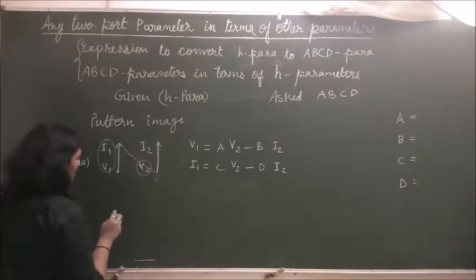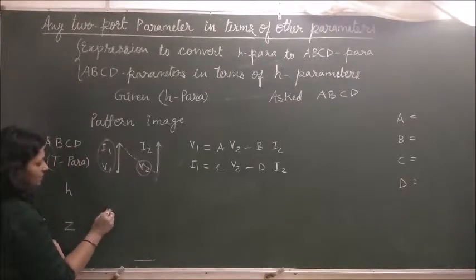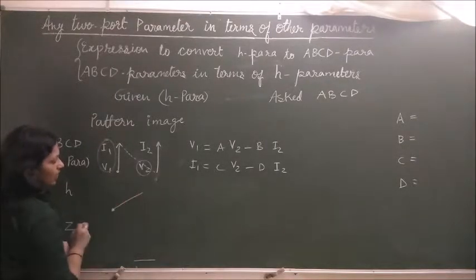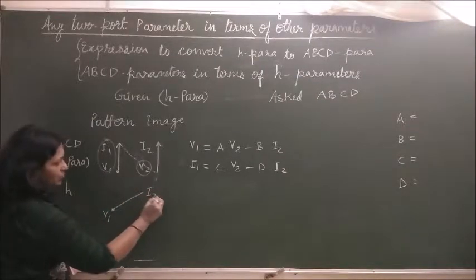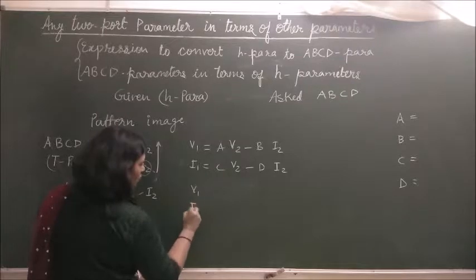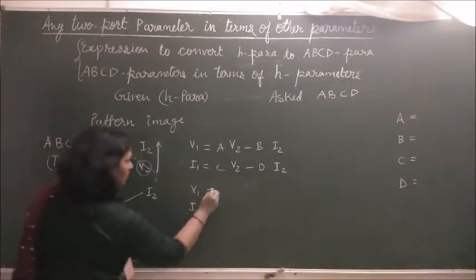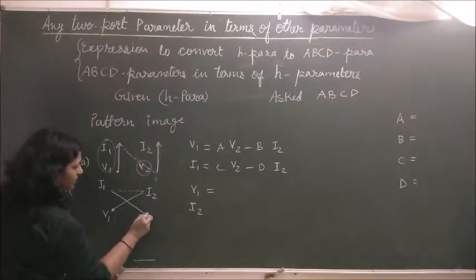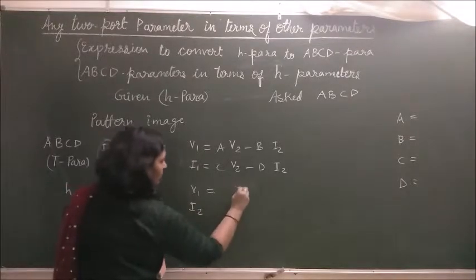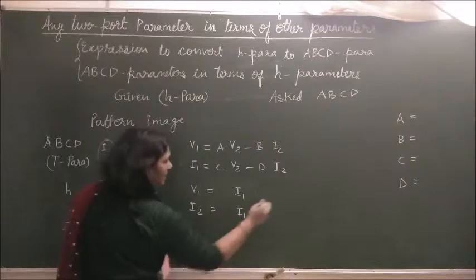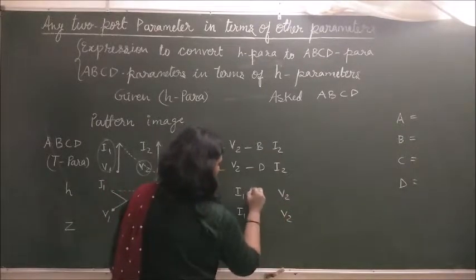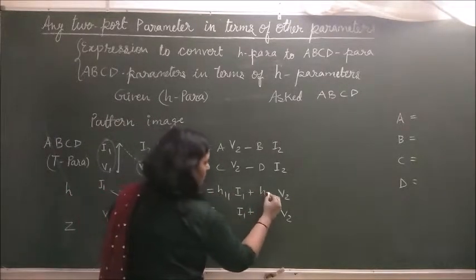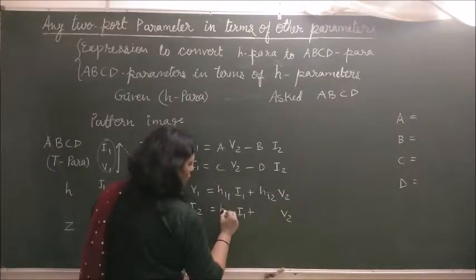Next is the H parameter. For H parameter, we again start from V1 and move from V1 to I2. So V1 and I2 come on the left-hand side of the equation. Then we move from I1 to V2, so I1 is the first term variable and V2 is the second term variable. Here we take a plus sign. Write down parameters H11, H12, H21, H22 sequentially.